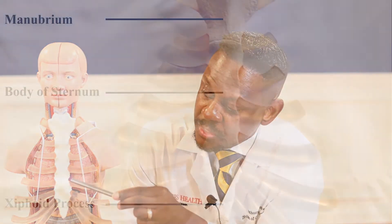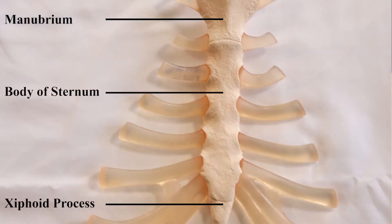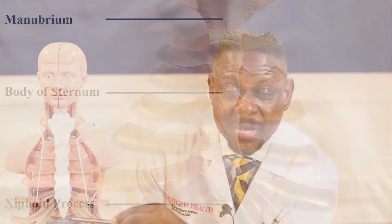This is a model of the human body here and this is the sternum. The sternum is broken up into three parts. There's the top part, referred to as the manubrium, the body of the sternum, and this lower end here is referred to as the xyphoid process.